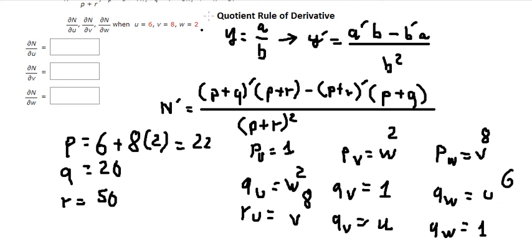Now for the first question, we need to find the first derivative of N with respect to u. So we have b, q, and b with r here. We put number 1 for b, go in here, q with u is number 2 go in here, and number 8 go in here.